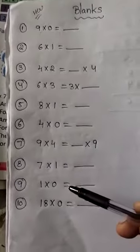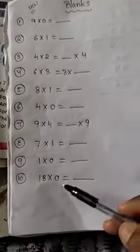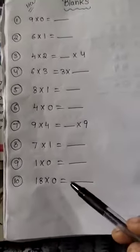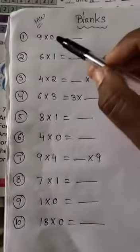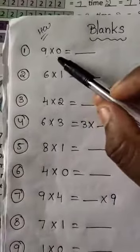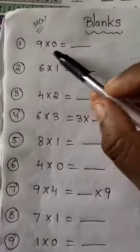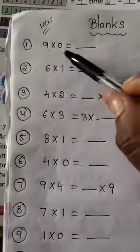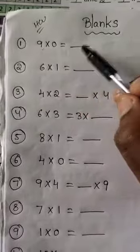We will do 10 blanks and copy the notes for homework. First one: 9 into 0 is equal to dash. 9 into 0 is equal to dash — this is the first blank.